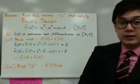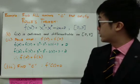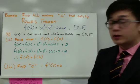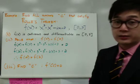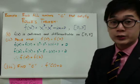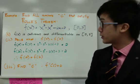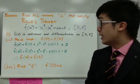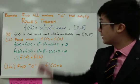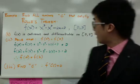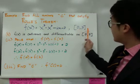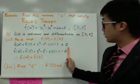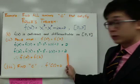Let's use Rolle's Theorem to verify the function f of x equals x cubed minus x squared minus 6x plus 2 on the closed interval [0, 3]. Since our function is a polynomial, it is both continuous and differentiable, so the first two conditions are proven. Now we need to verify the third condition: f of a should equal f of b. With a equal to 0 and b equal to 3, plugging in gives f of 0 equal to 2 and f of 3 equal to 2 as well.